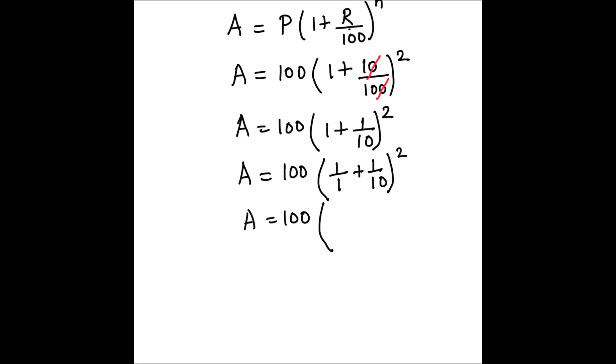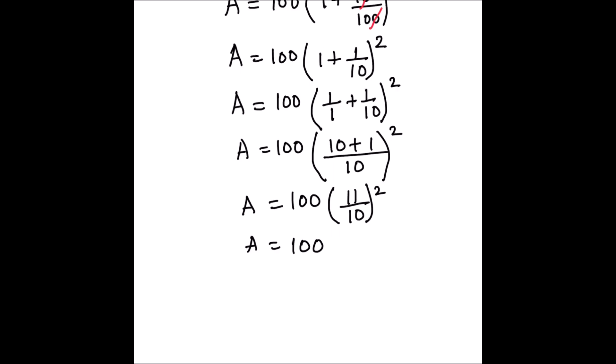A will be equal to 100 times, I'm going to take the LCM of the denominators to solve these two fractions. LCM will be 10, so this will be (10 + 1)/10 whole square. Next step will be 100 times (11/10)^2.